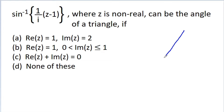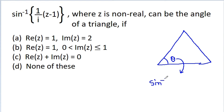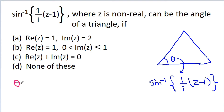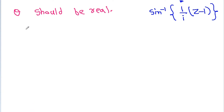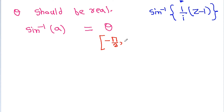Suppose this is any triangle and the angle is theta. Then according to the question, sin inverse(1 / (iz × (g-1))) is the angle of a triangle. Since theta is the angle of a triangle, theta should be real. And if sin inverse(a) = theta, then theta should belong to [-π/2, π/2] because that is the range of the sin inverse function.